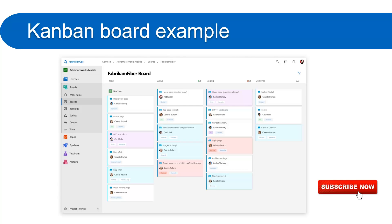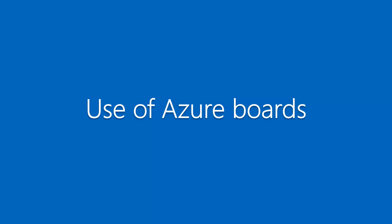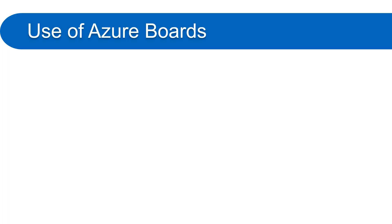This is how your Kanban board will look when you work on Azure Board. This is a sample from the Azure DevOps official documentation website. You can see there are four columns, and these columns have multiple work items. From each column you can see the status of a particular work item, and each work item is assigned to someone from your team.